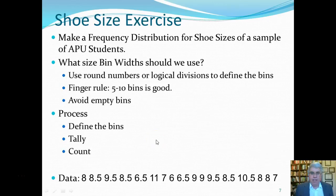Here, we're going to do an example. We're going to make a frequency distribution of shoe sizes of a sample of students from Azusa Pacific University. What bin width should we use? Here's some general rules. Use logical round numbers or use round numbers or logical divisions to define the bins. Maybe multiples of 5 or multiples of 10, or maybe things that just group together nicely. A good rule is the finger rule. Between 5 and 10 bins is a good number, between one hand and two hands. But you want to avoid empty bins because empty bins make it look choppy and you can't really get a sense of how smooth the distribution is.